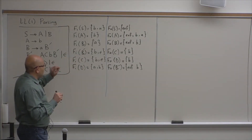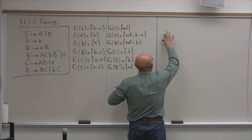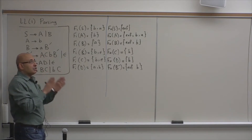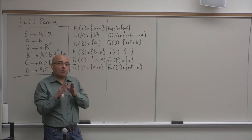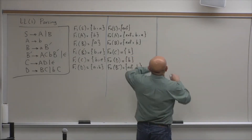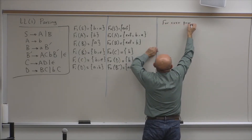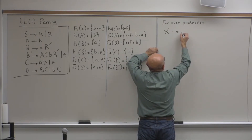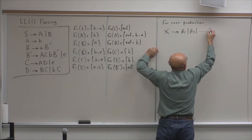So let's now review the LL1 rules. The condition for LL1 — you should check basically for every rule in the grammar. Check to see if there are multiple valid options. If there are two or more valid options, then it's not an LL1 grammar. So for every production x goes into β₁ or β₂ or through βₙ.